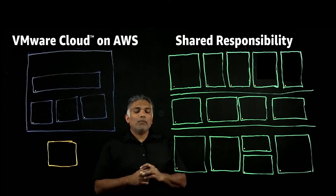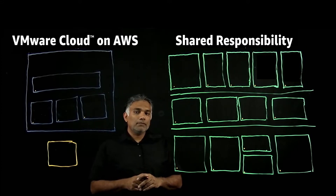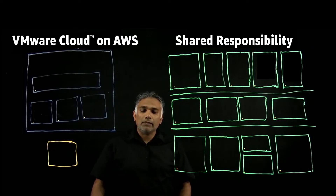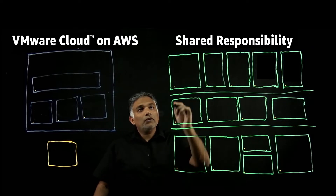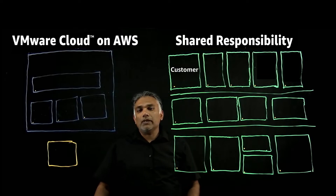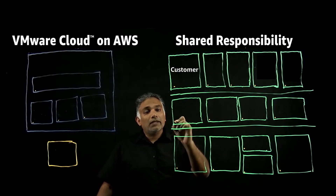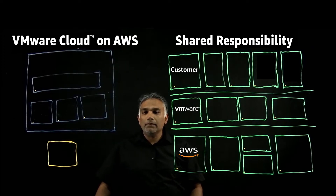Let's look at the shared responsibility model. There are three different sections of the shared responsibility model. The first is the customer responsibility. The second is VMware's responsibility, and the third is AWS responsibility.